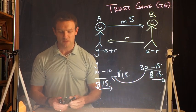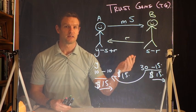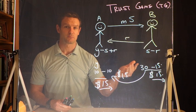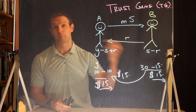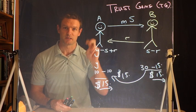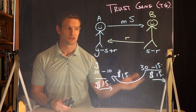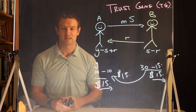You can see why this is called the trust game. If A trusts B, they send money to B, it gets multiplied, and B can send some back to A. Sometimes this is called an investment game as well, because A is choosing to invest in B, get a return, and B can choose to send the return back to A.